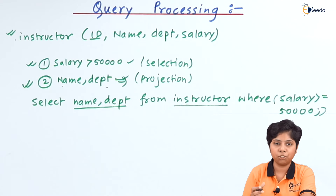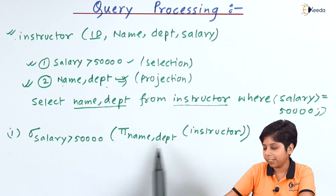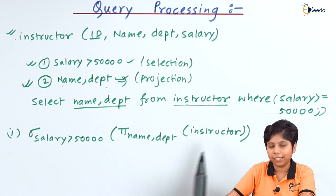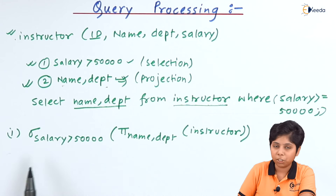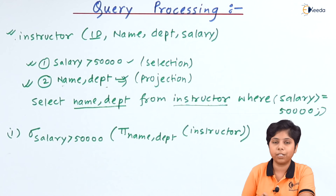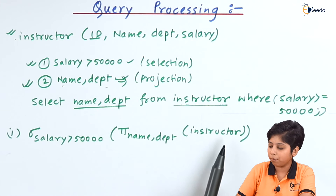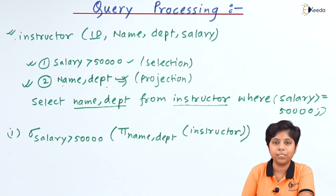The parser and translator translate the query into a relational algebraic expression. For example, we can first project all attributes from the instructor relation, then apply selection where salary is greater than 50,000. Or we could first project only the name and department from the instructor relation and then apply the condition salary greater than 50,000.